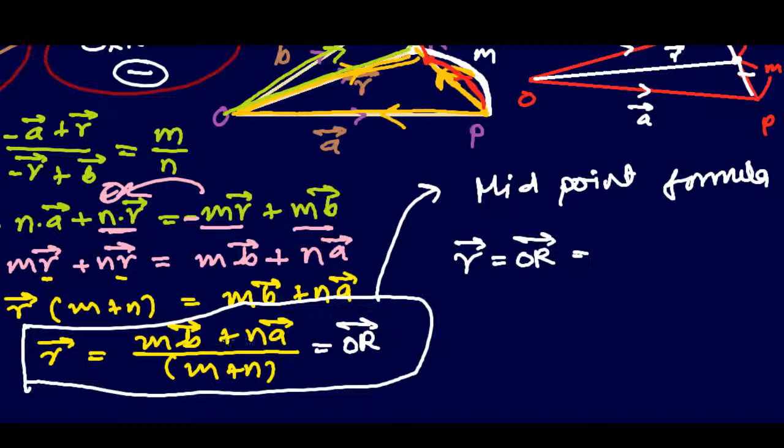M and N are both equal, so it will be now here M and N both are equal, so it will be MB plus, now in the place of NA, what I'm going to write, I'm going to write again MA,